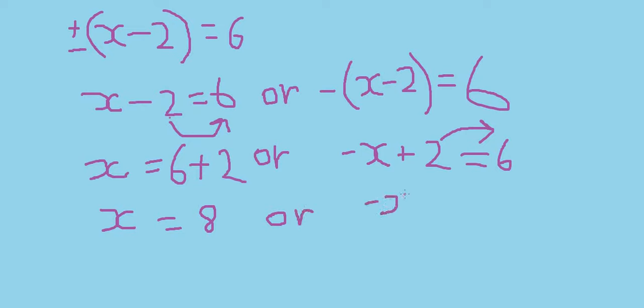Negative x equals to 6 minus 2. It is plus here. We need to go to the other side, it will be minus. So it will be 6 minus 2, which is 4.